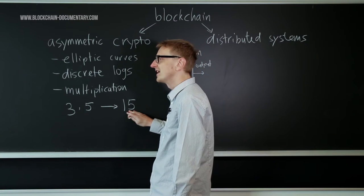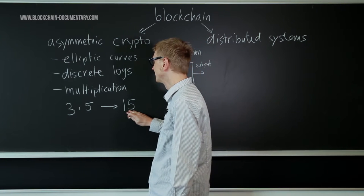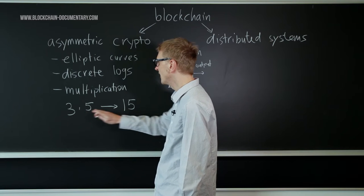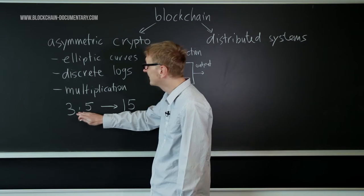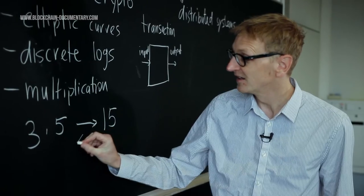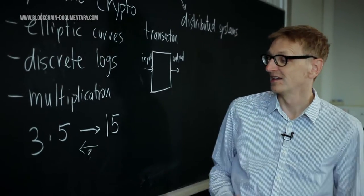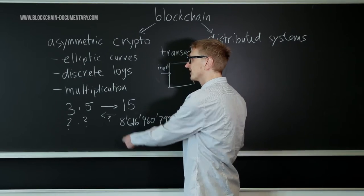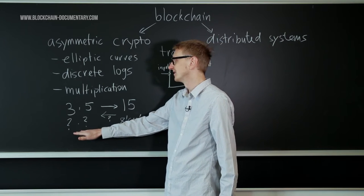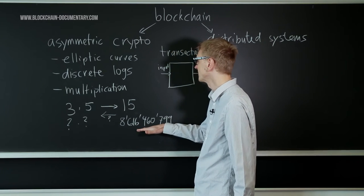Now in this direction multiplication is very easy, very simple to do. However, if the numbers get larger and larger, it's still easy in this direction but it's very hard in this direction. If you make these numbers sufficiently long, then computers cannot figure out the factors of this product anymore.